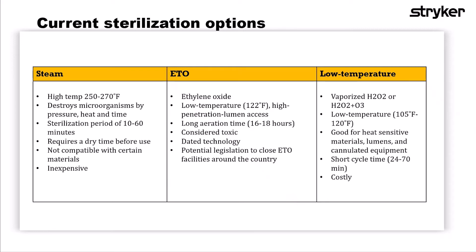ETO has been utilized for a very long time. A fun fact is that ETO was utilized as early as World War I and II for sterilization of meal rations. It is classified as low temperature and has high penetration of lumen accesses. It also has a very long aeration time because the chemicals used in ETO are carcinogenic and must be vented out over a long period of time to be safe for both humans and the environment.